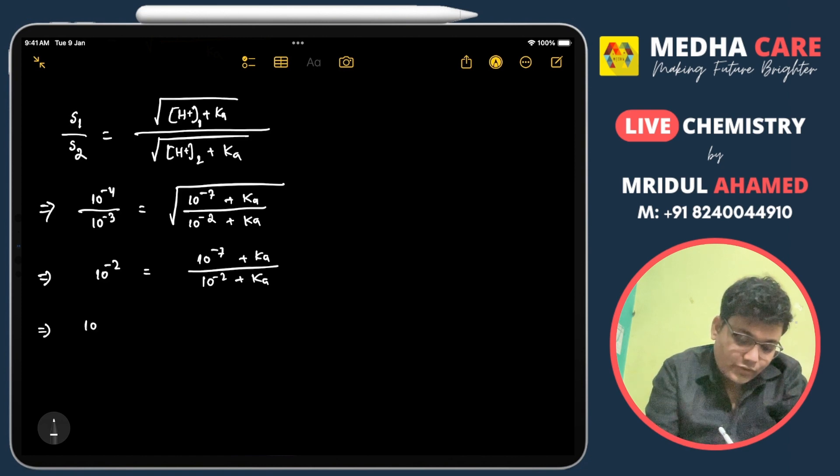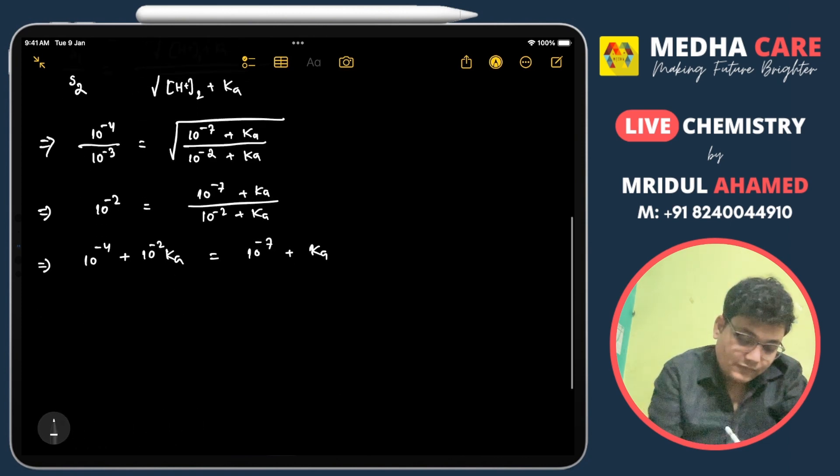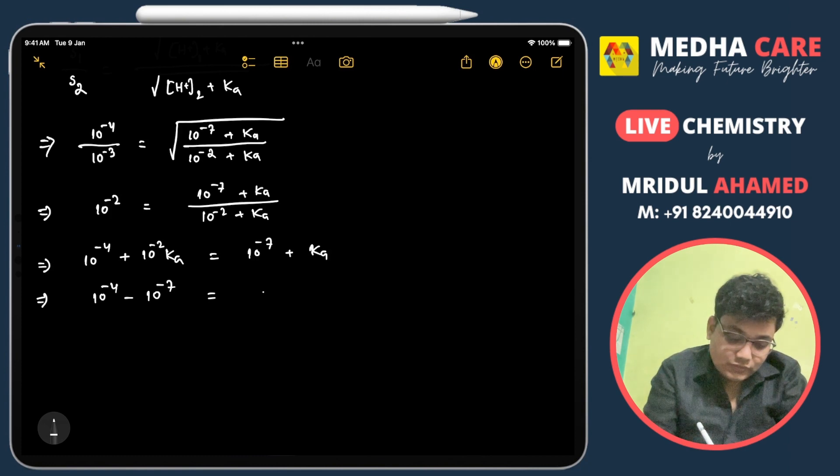Now it will be 10^-4 plus 10^-2 times Ka equals 10^-7 plus Ka. Then 10^-4 minus 10^-7 equals (1 minus 10^-2) times Ka.